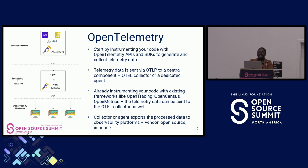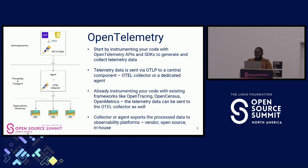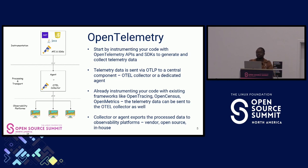That telemetry data is then sent to a central component — either the OpenTelemetry Collector, which is part of the framework, or a dedicated agent provided by a vendor or your organization. The data is transmitted via a protocol called OTLP — the OpenTelemetry Protocol — which provides a standard for how telemetry data moves from one component to another, whether from your application to the collector, or from the collector to different observability platforms.